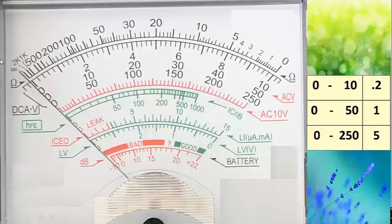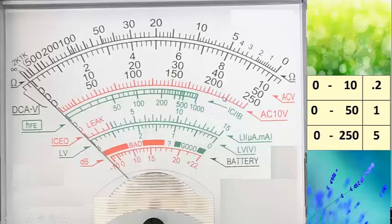Continuing to 50. Then the scale continues: 55, 60, 65, 70, 75, 80, 120, 125, 135, 140, 145, 150, 155, 165, 170, 175, 180, 185, 190, 195, 200, 205, 210, 225, 250. So the equivalent graduation is 5.